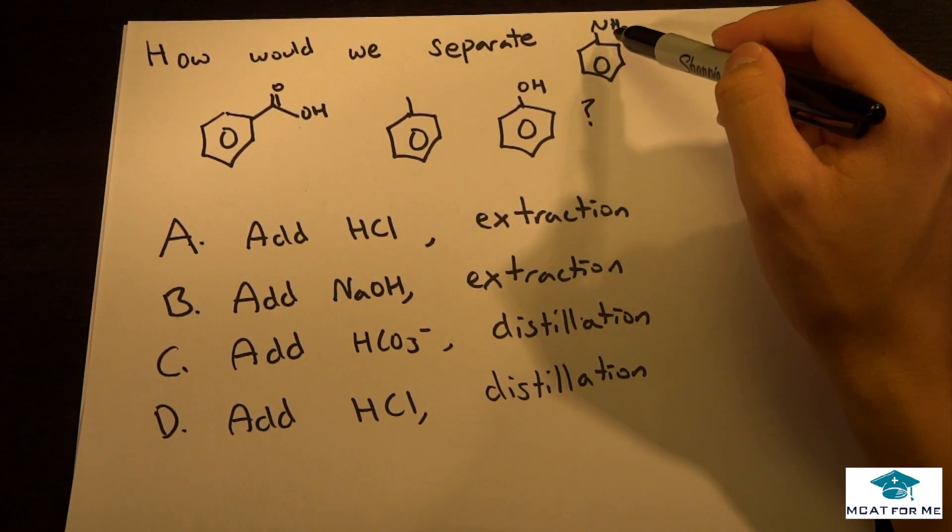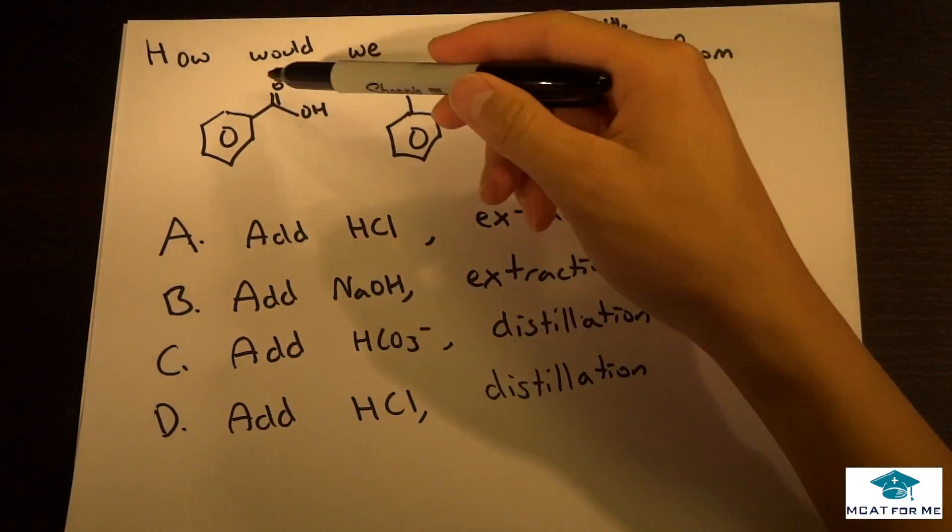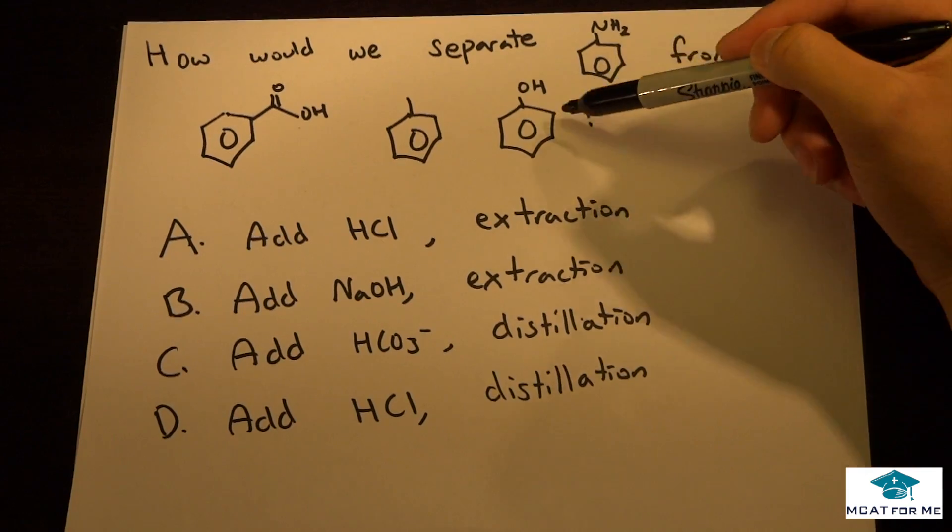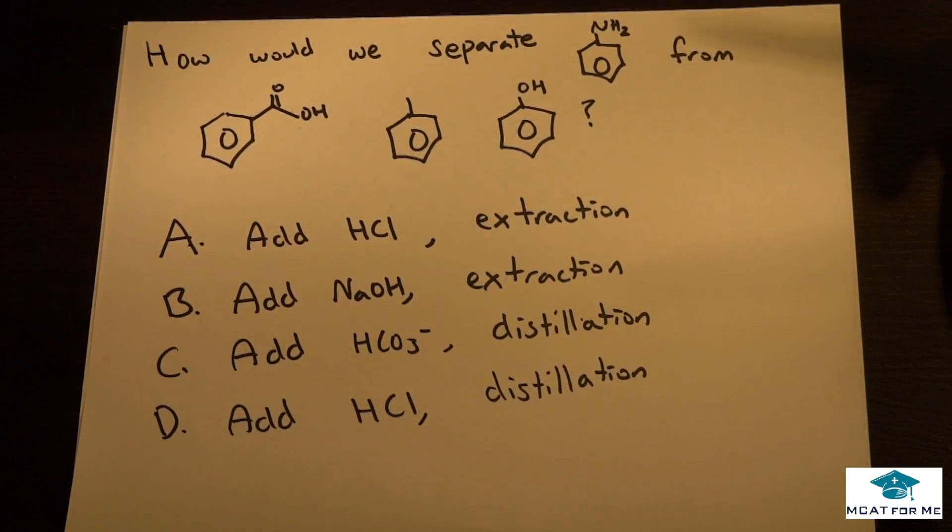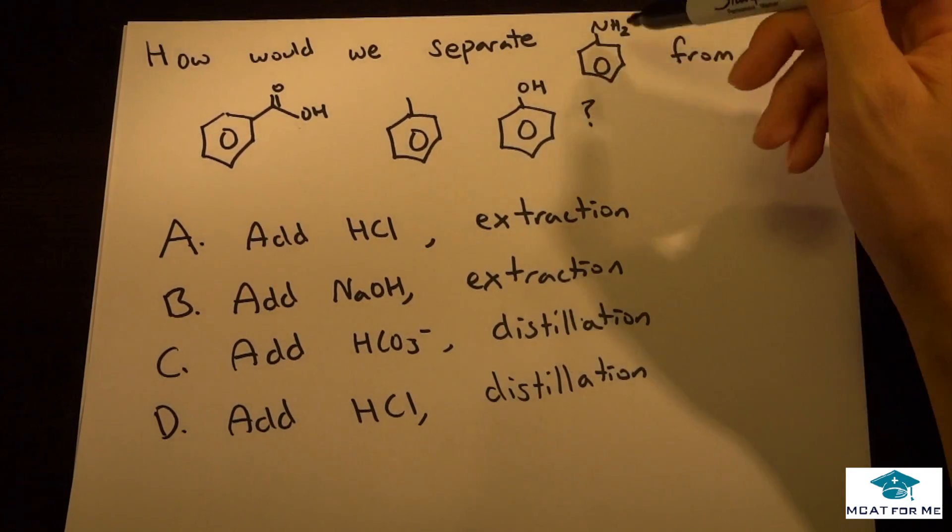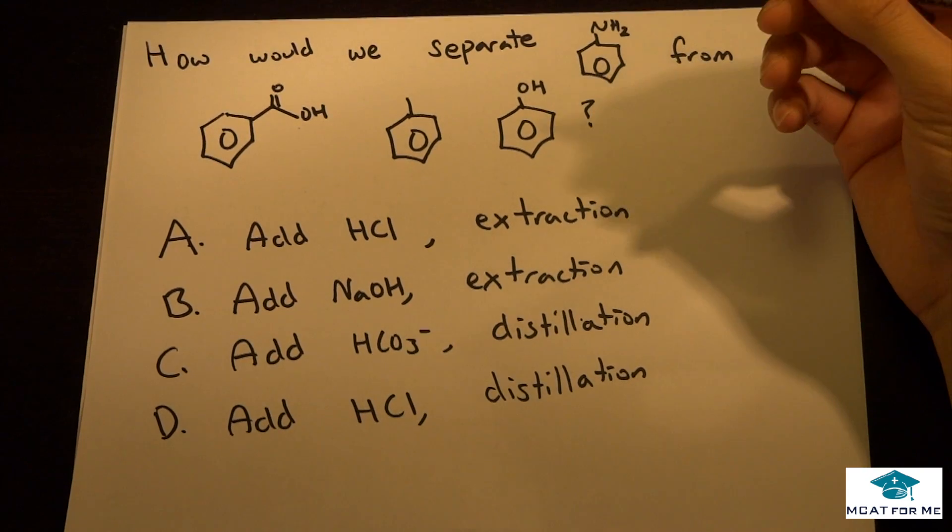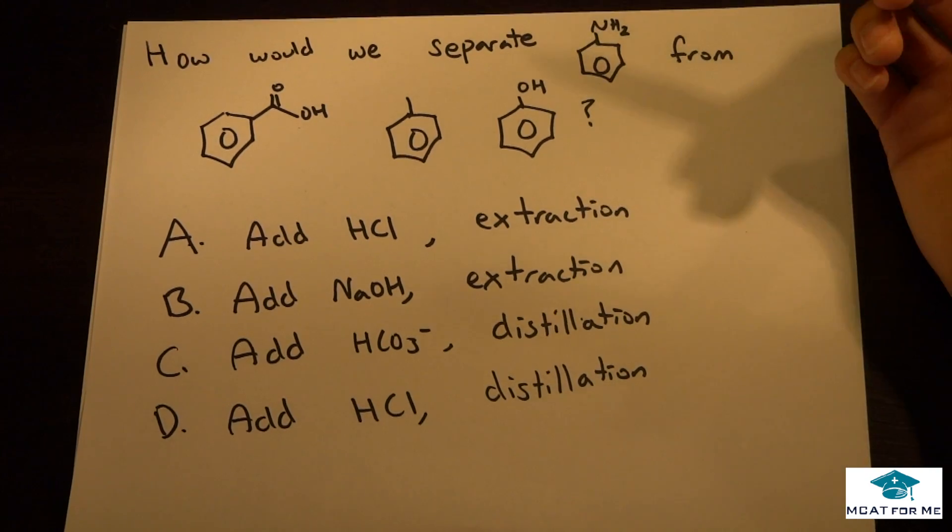So NH2, that would be a base, OH is an acid, and the carboxylic is an acid. Can we tell much about the boiling points? From this, honestly we can tell a little bit. Something with a higher molecular weight is going to have a higher boiling point and we can kind of figure that out from here. Something with more intermolecular forces will also have a higher boiling point which we can kind of tell.